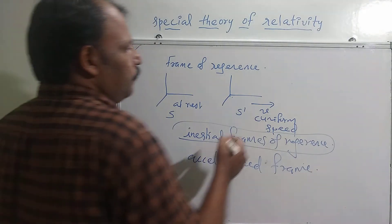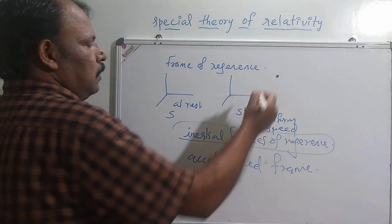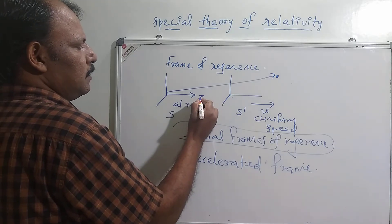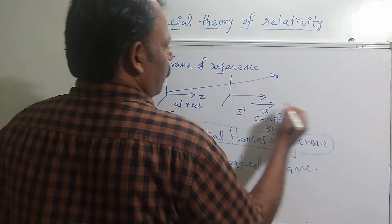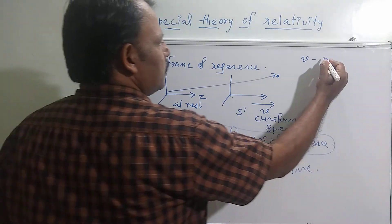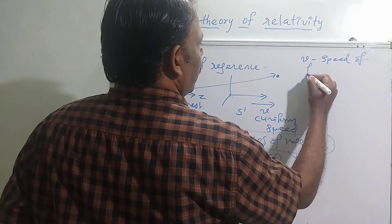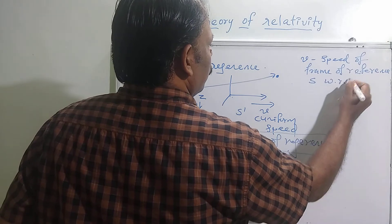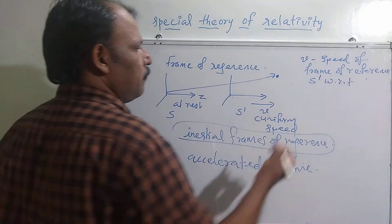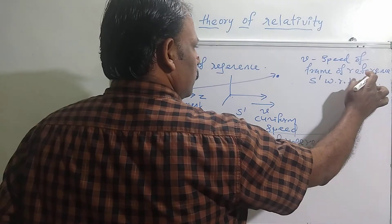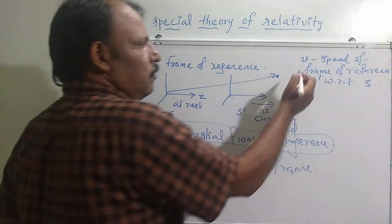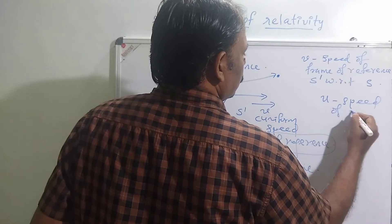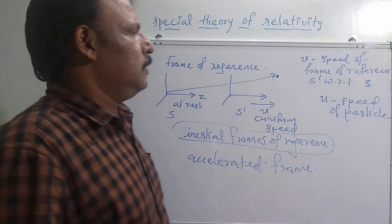Consider a particle situated at a point. With respect to frame S, its coordinate is along the Z direction — that is the direction of motion of this frame of reference. The frame S prime is moving with a speed V with respect to S. We usually take V for representing the speed of the frame and U for representing the speed of the particle.